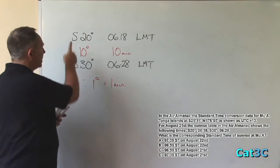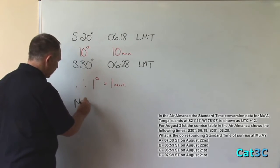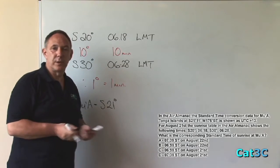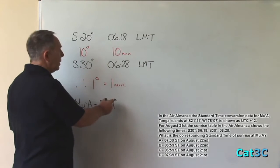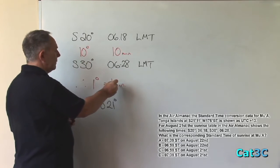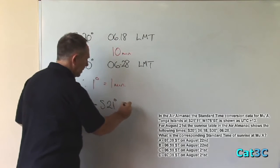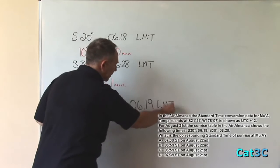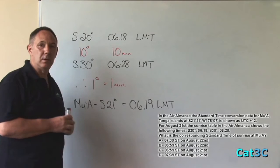We know that Mua is at south 21. You can actually ignore the odd 11 minutes for this question. It won't make any difference to the answer. Therefore, it's going to be 1 degree difference, which is 1 minute difference, and it's 1 minute later than 618 equals 0619 local mean time. So the time of sunrise at Mua is 619 local mean time. What we now need to do is to convert that into UTC.